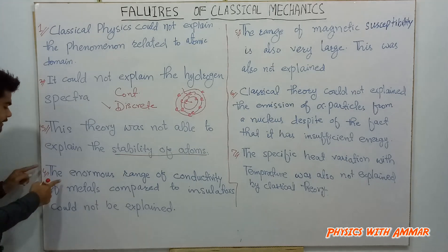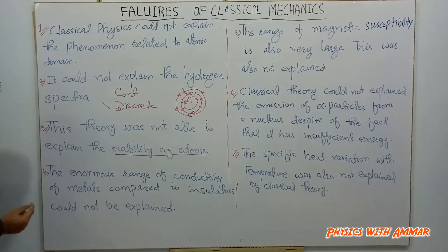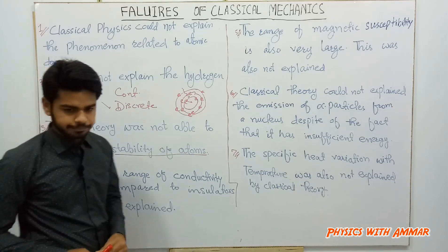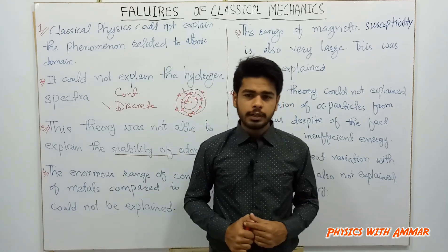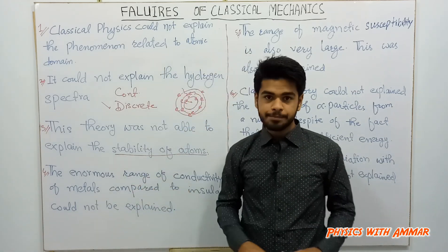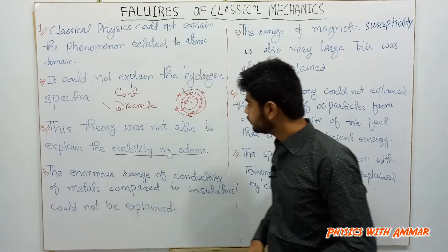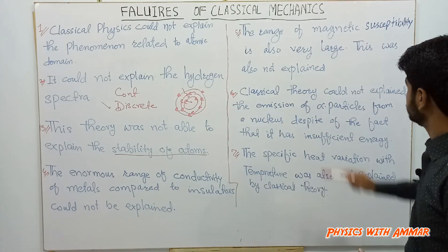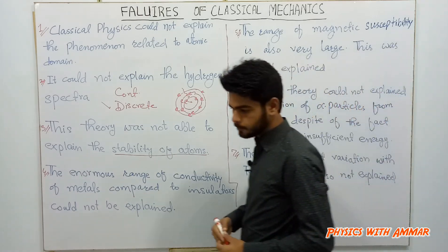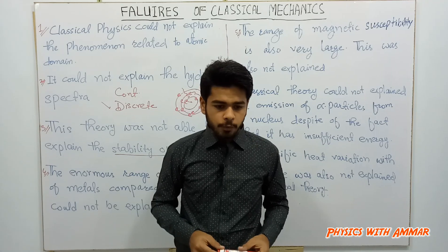The fourth failure: the enormous range of conductivity of metals compared to insulators could not be explained by classical mechanics. The difference in conductivity between conductors and insulators is extremely large, and classical theory could not account for this range.